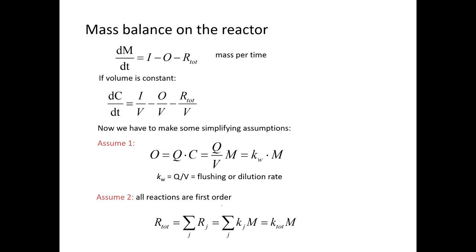We're using the word reaction in a broad sense — not just chemical reactions. Volatilization could be a reaction. Being deposited into the sediment would remove the chemical from the box, and we could think of that as a reaction. The sum of all those reactions we'll just call our total. The change in mass over time, dm/dt, equals inputs minus outputs minus all reactions removing mass, in units of mass per time — like kilograms per year. If volume is constant, we can divide by volume to get dc/dt.